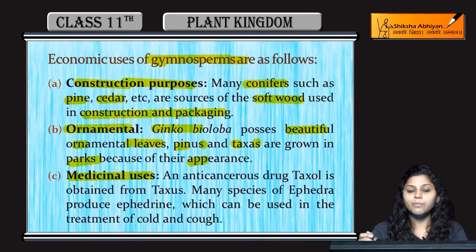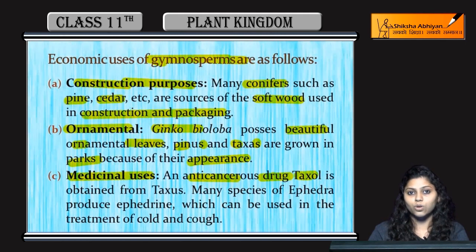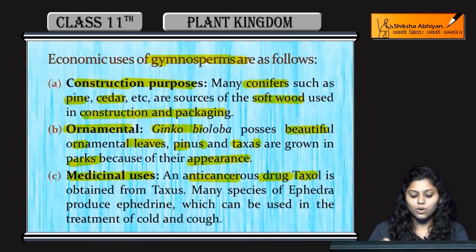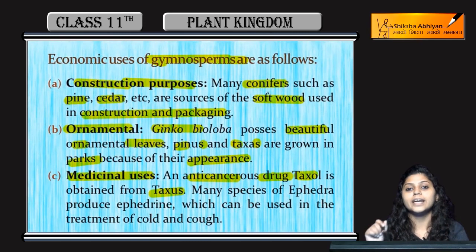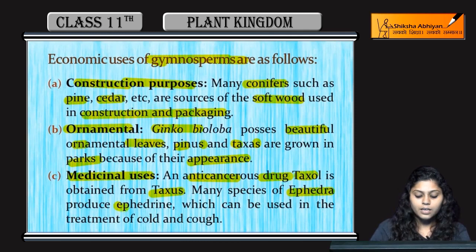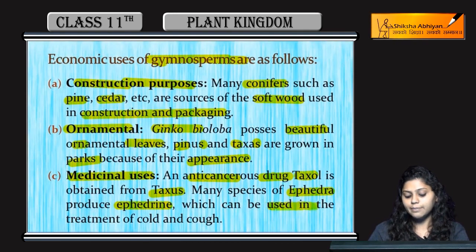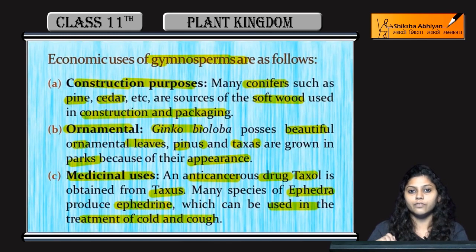For medicinal importance, some anti-cancerous drugs such as taxol are obtained from taxus, which is a gymnosperm. Some species of ephedra produce ephedrine, which can be used in the treatment of cold and cough.